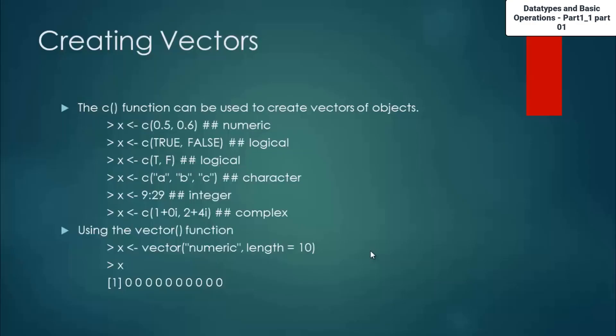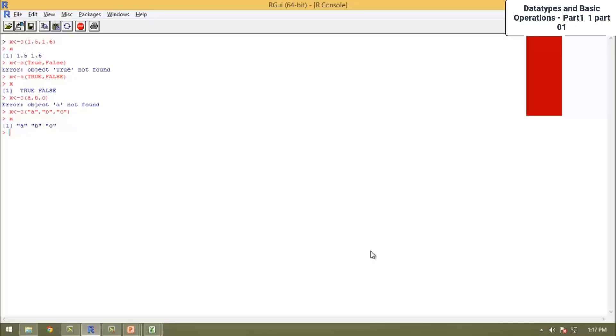Now again, in the same way, you can create an integer vector and a complex vector. As we have already seen the integer vector, I will show you the complex vector. Now I have added two numbers, two complex numbers, one is 1 plus 0i and the other is 2 plus 5i. These are called complex numbers, as there are imaginary parts associated with the real numbers. Now when I display this x, I will get 1 plus 0i and 2 plus 5i inside the vector.